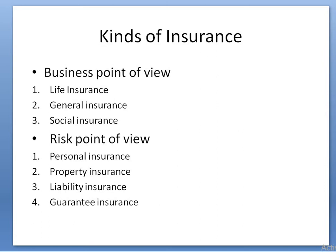The next category is liability insurance, which covers the risk of a third party. It includes compensation to employees, where the employer takes out insurance to protect employees. The insurance company has a policy that benefits both the employer and employees. Liability insurance covers the risk of a third party.